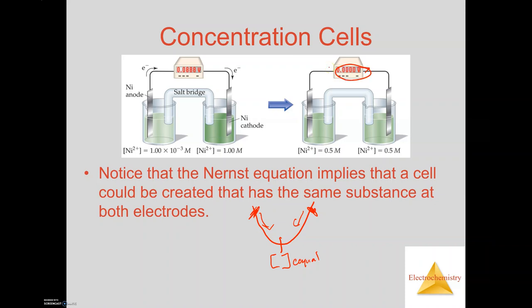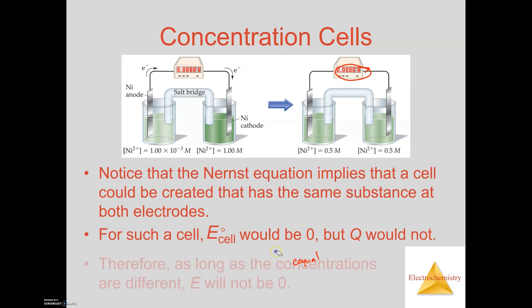What happens then is the cell potential basically becomes neutral and the voltage that you see is zero volts. So this is an application of the Nernst equation, and that goes back to the Q that we were just talking about. As long as Q is not one, you're going to have a cell potential. But as long as the concentrations are different, E will not be zero.